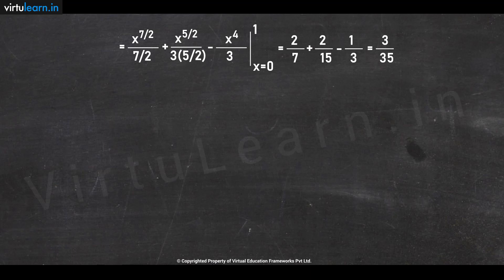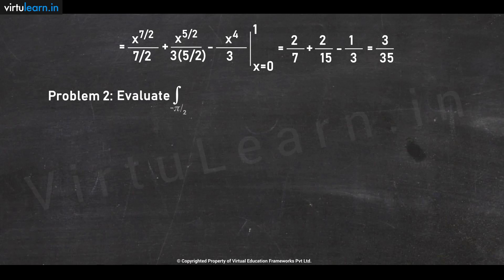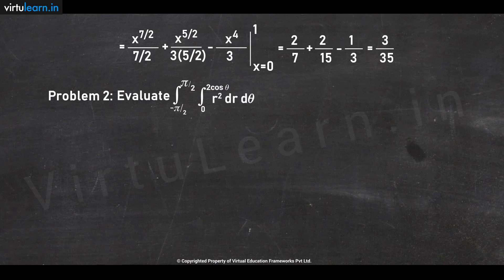Let us discuss a problem on polar coordinates. Evaluate the integral: θ from −π/2 to π/2, r from 0 to 2cosθ, of r² dr dθ. Here r has variable limits, so we perform integration with respect to r first. When integrating with respect to r, we treat θ as a constant.